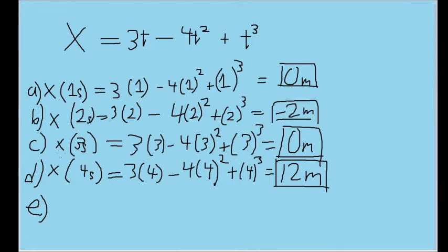For part c, we're asked to find the position at three seconds, which gives an output of zero meters once again. And for part d, we find the position at four seconds, which gives an output of 12 meters. So that's the first four parts of this problem.